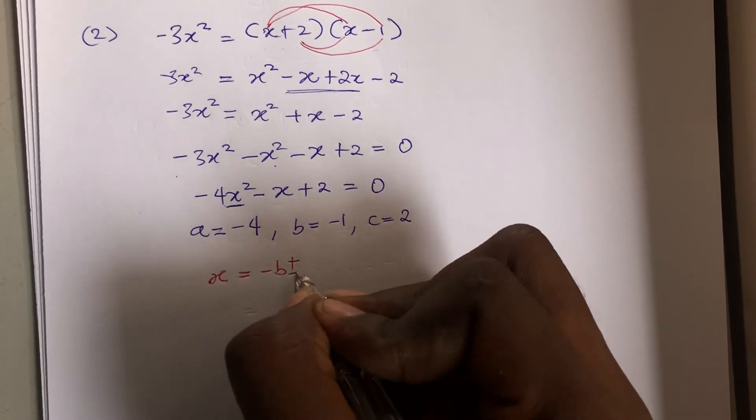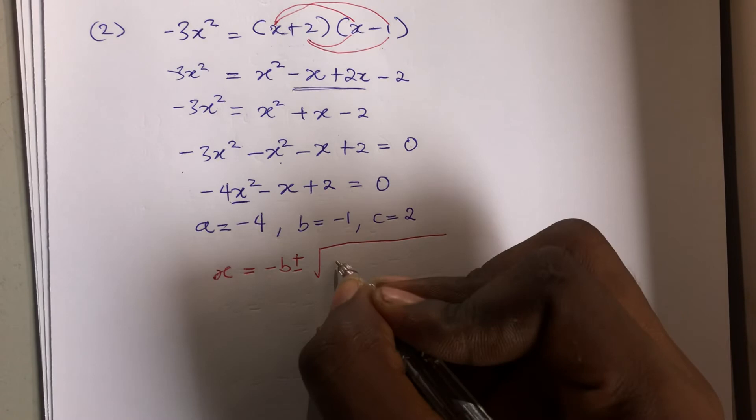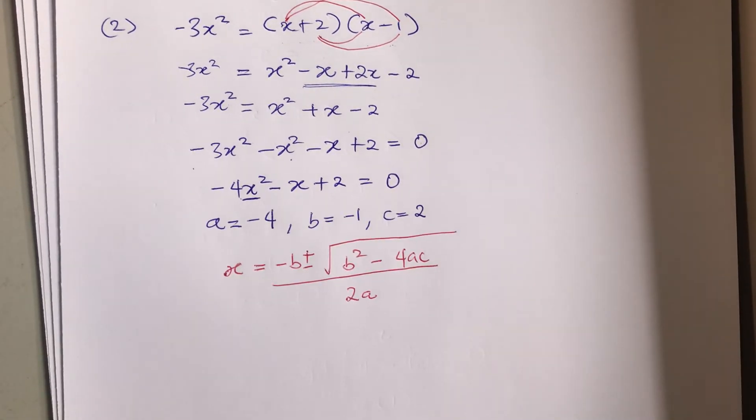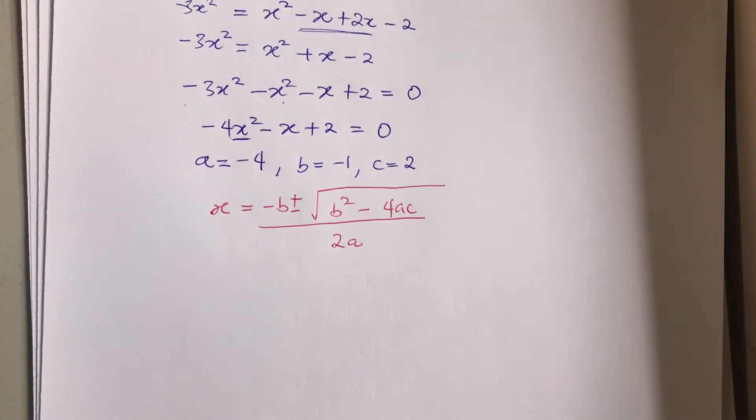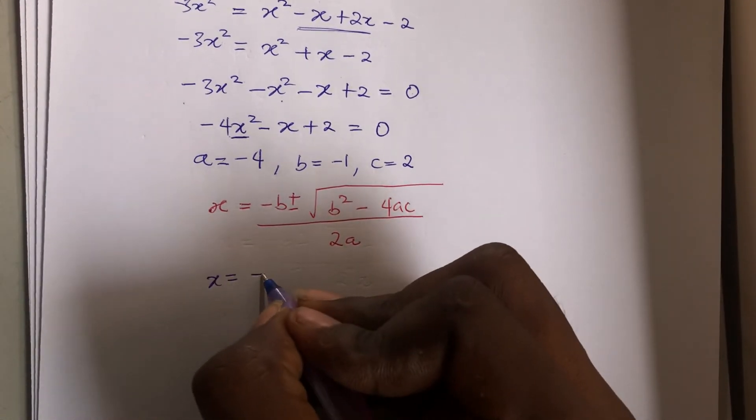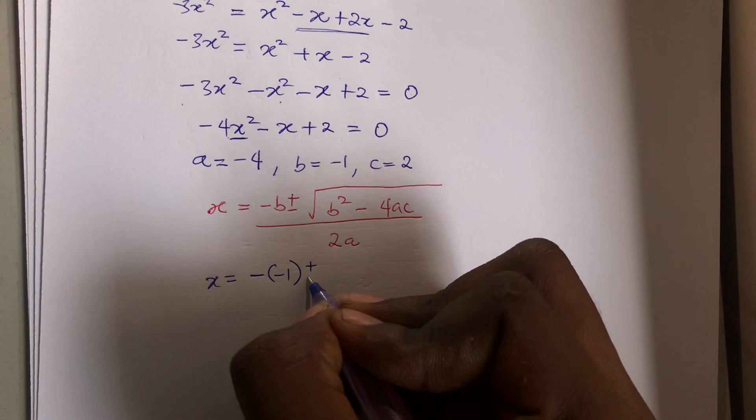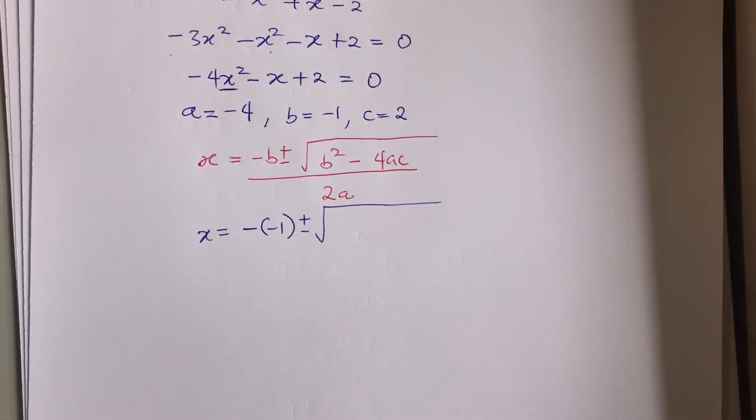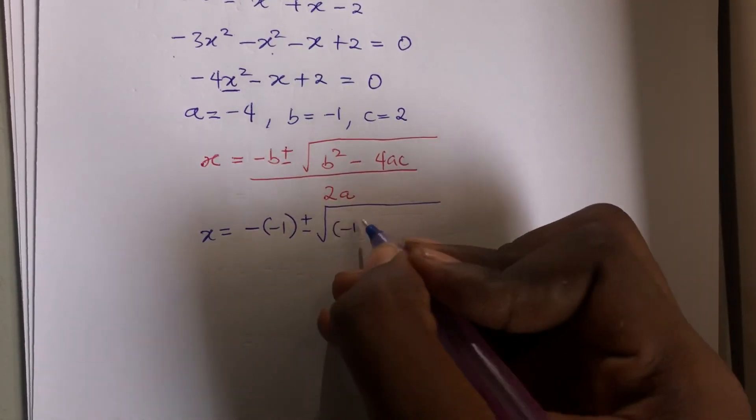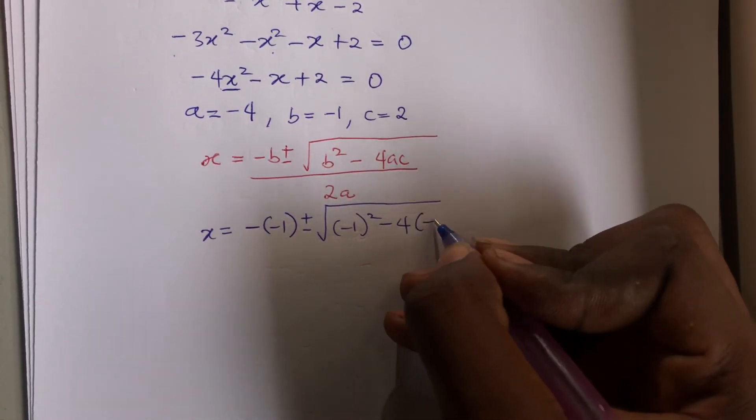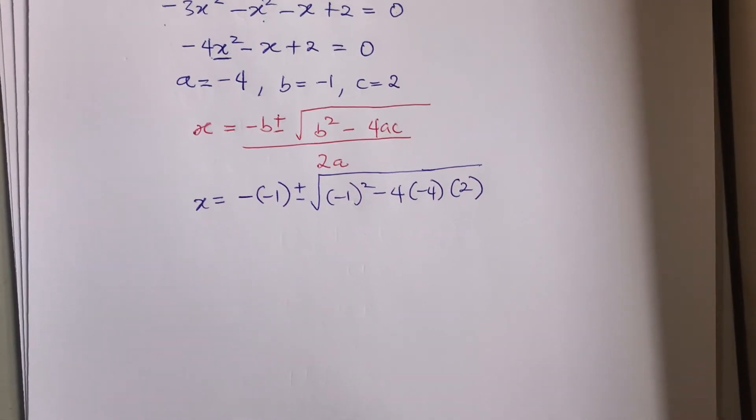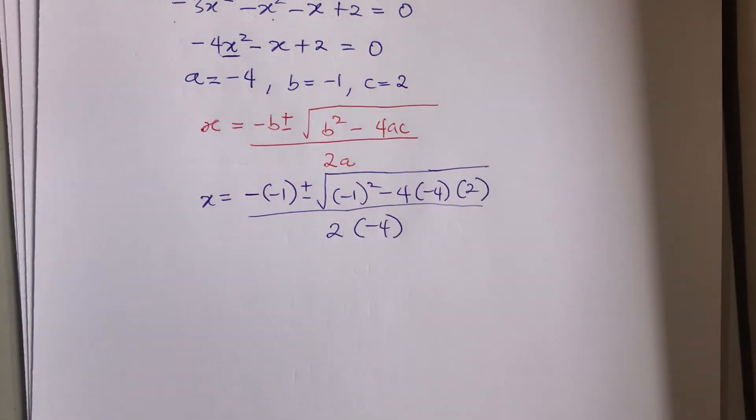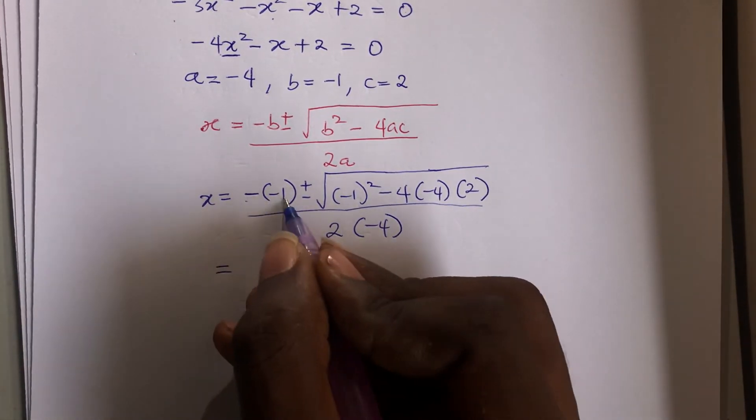Again write our formula. I always advise to write your formula as often as possible because it helps you to memorize it quicker. So you have this here all over 2a. Let's input our values: x equals to minus b, that's minus 1 here, plus minus, be very careful, minuses can really trip you up if you ignore them. B is minus 1 all squared, a is minus 4 and c is 2, all over 2a is minus 4. Minus 1 minus 1 gives you a plus 1.